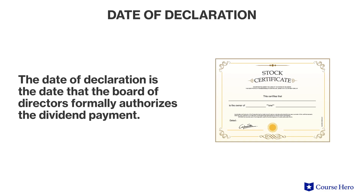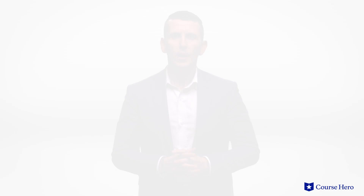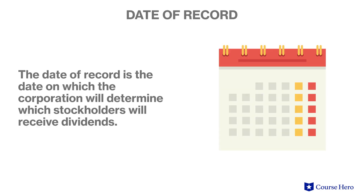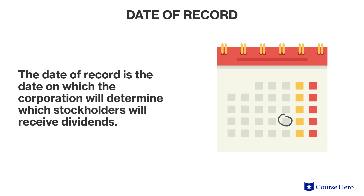The date of declaration is the date that the board of directors formally authorizes the dividend payment. When the dividend is declared, the corporation recognizes the dividend as a liability. The date of record is the date on which the corporation will determine which stockholders will receive dividends. Anyone who acquires shares of stock after the date of declaration but before the date of record will receive an immediate dividend.